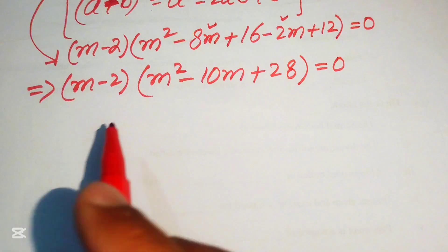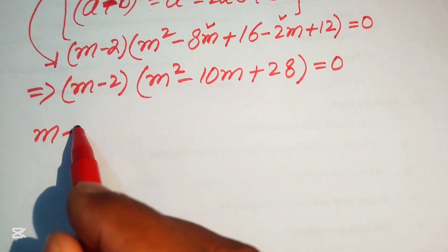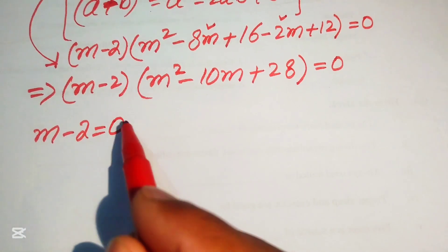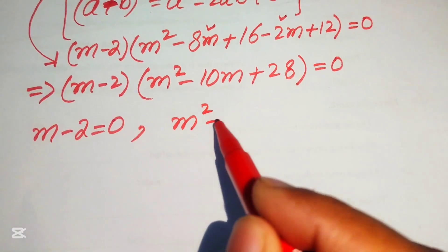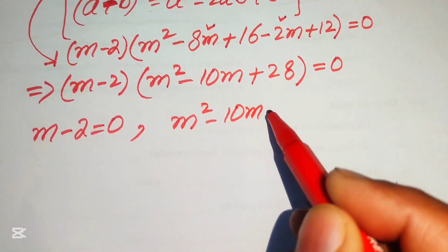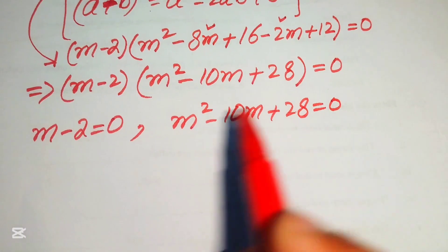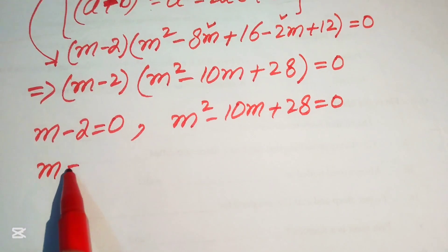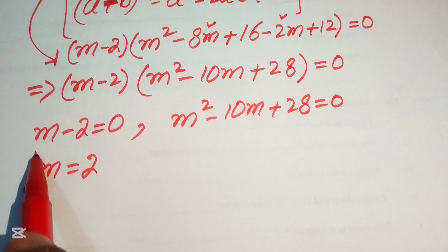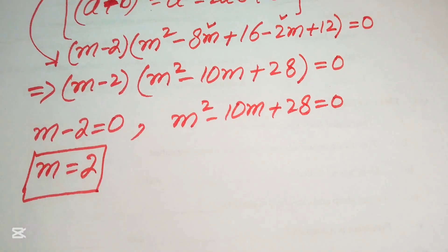We now split this into two cases. Case 1: M - 2 = 0, which gives M = 2. This is the first real root of the given equation. Case 2: M² - 10M + 28 = 0, which we solve as a quadratic equation.